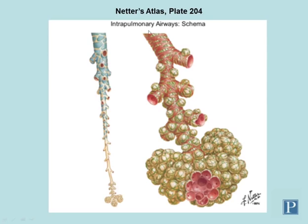On the right you see the end of a terminal bronchiole, which is the end of the conducting portion of the respiratory system — no gas exchange occurs here. Further down, sac-like alveoli appear attached to the surface of bronchioles; at this point these bronchioles are referred to as respiratory bronchioles. Notice that the number and density of alveoli greatly increases the further you go down the respiratory tree, until the wall of the passageway is composed almost completely of alveoli.